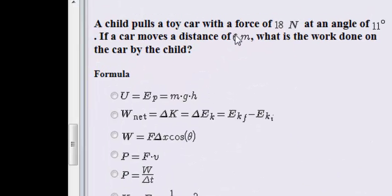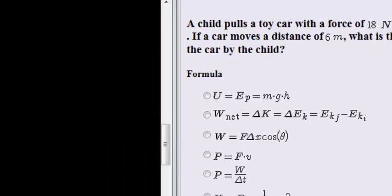A child pulls a toy car with a force of 18 newtons at an angle of 11 degrees. If the car moves a distance of 6 meters, what is the work done on the car by the child?